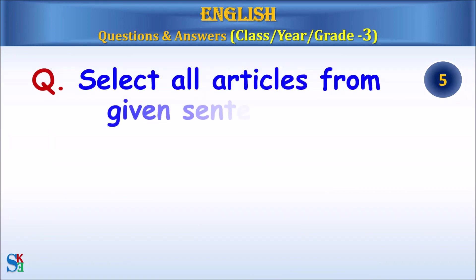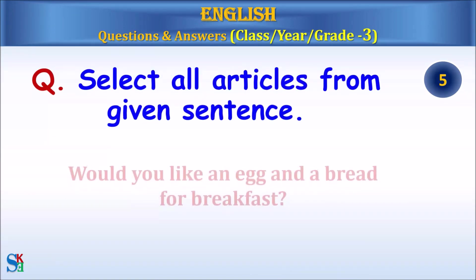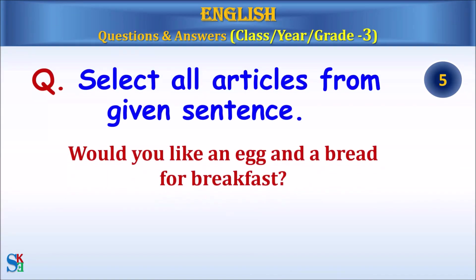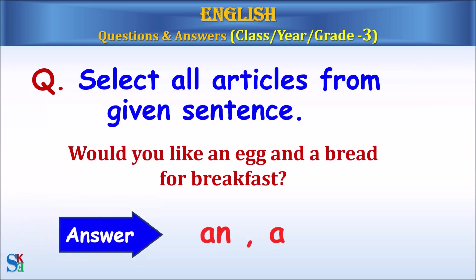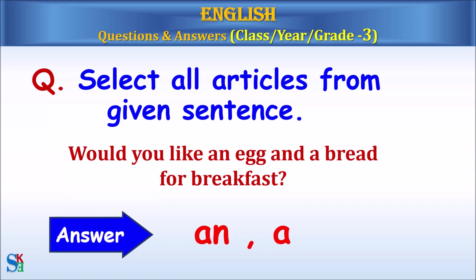Question: Select all articles from the given sentence. Sentence: Would you like an egg and a bread for breakfast? Answer: An and A.